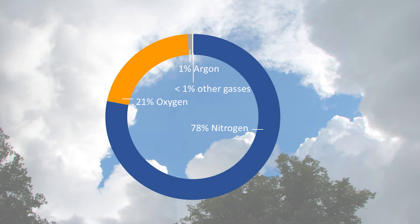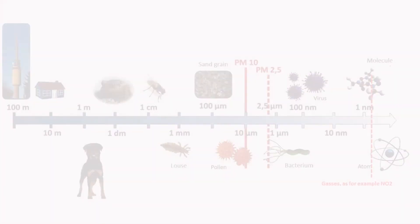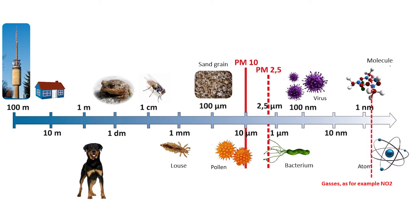Gases and particles that can harm human health and the environment are called air pollutants. There are natural sources of air pollution such as volcano eruptions, sand, dust, and pollen. Man-made sources are traffic, heating, emissions from industry, or construction work. The most important air pollutants are nitrogen dioxide (NO2), which is a gas, and particulate matter, abbreviated as PM.